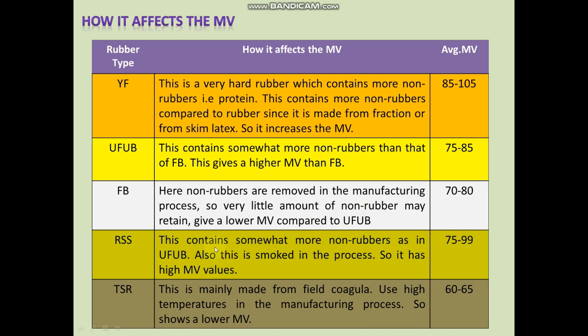RSS has basically the same rubber and non-rubber composition as unfractionated unbleached crepe rubber, but it is a sheet rubber that is smoked during the process. It also shows somewhat high Mooney viscosity values — sometimes exceeding that of unfractionated unbleached crepe rubber — ranging from 75 to 99. Technically specified rubber (TSR) is made from field coagula; high temperatures and high cutting and shearing actions are applied during manufacturing, which reduces molecular weight, resulting in lower Mooney viscosity values, normally ranging from 60 to 65 Mooney units.